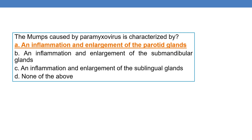Mumps, which is caused by paramyxovirus, is characterized by inflammation and enlargement of the parotid salivary glands. The correct option is option A — mumps is characterized by inflammation and enlargement of the parotid glands.